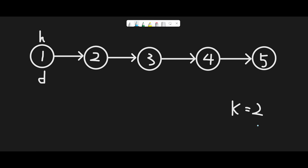To solve this question with the example one two three four five and k equal two: first, create a dummy pointer initialized with head, so the dummy pointer is pointing to one. Then we move the dummy pointer k minus one times — since k equals two, we move it once — so the dummy pointer is now pointing to two, which is our first target node.